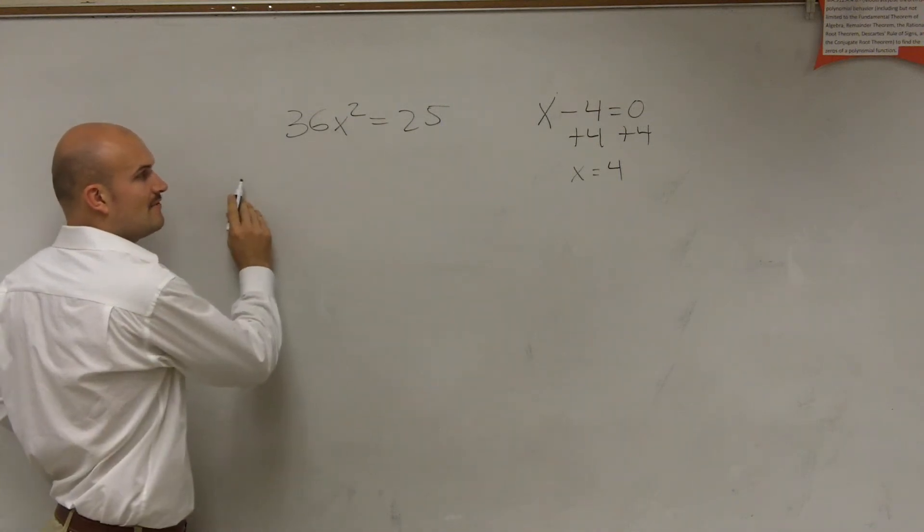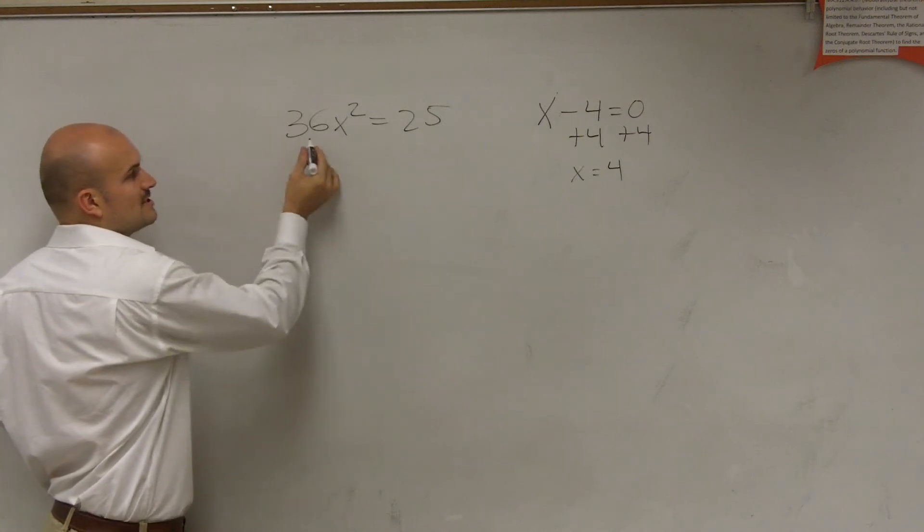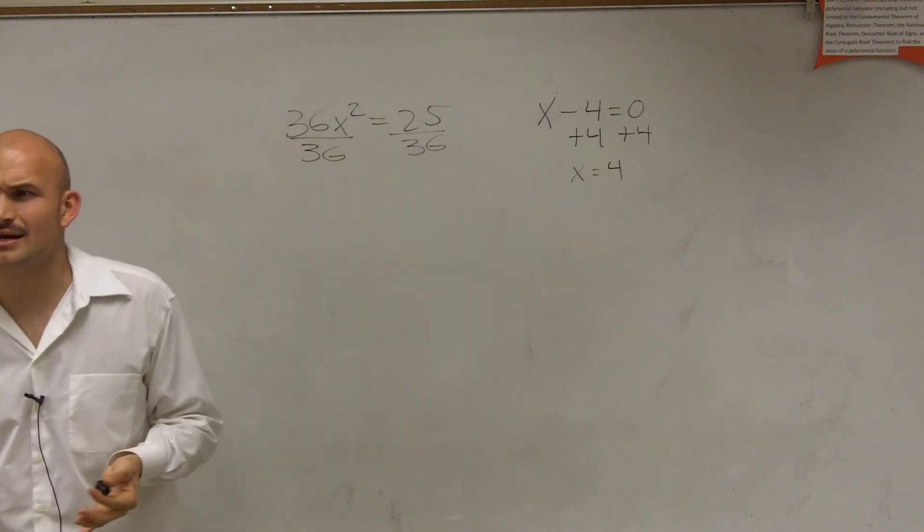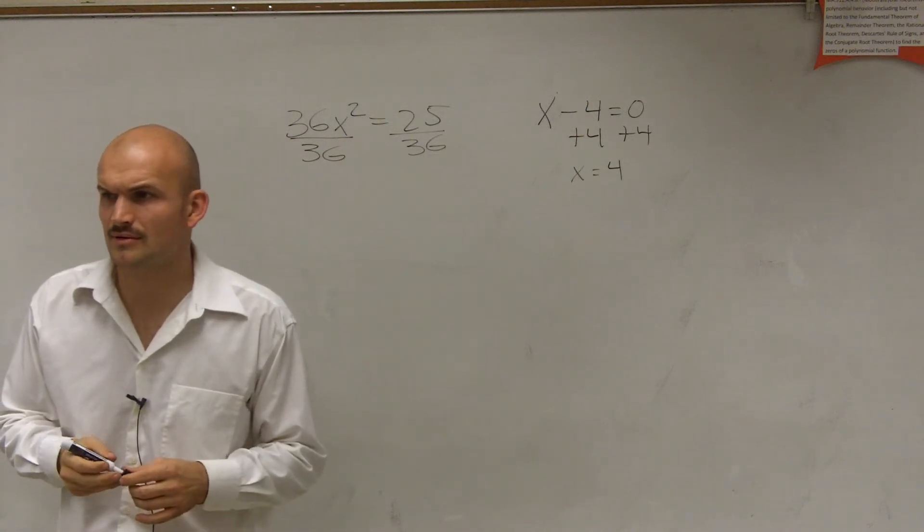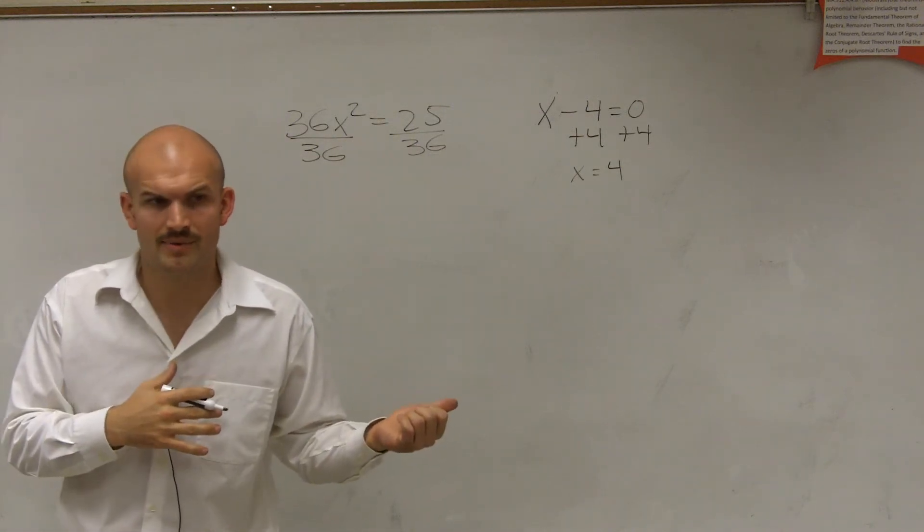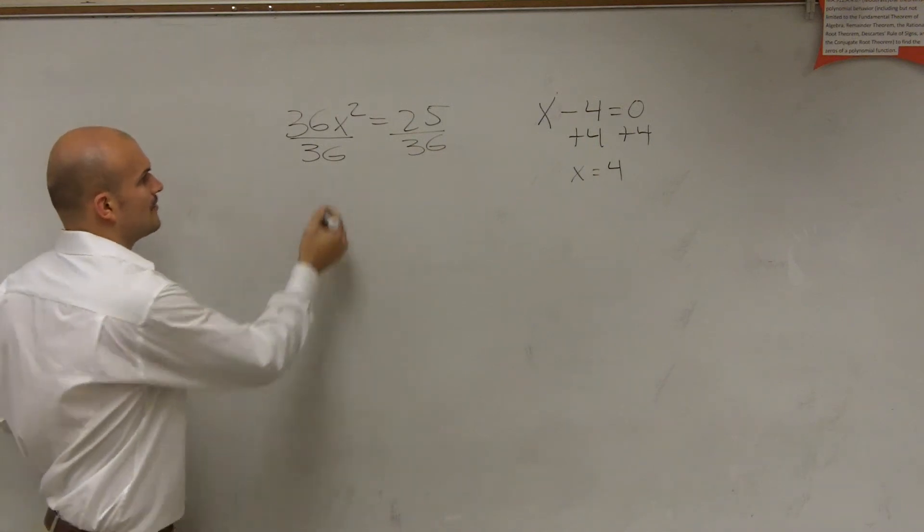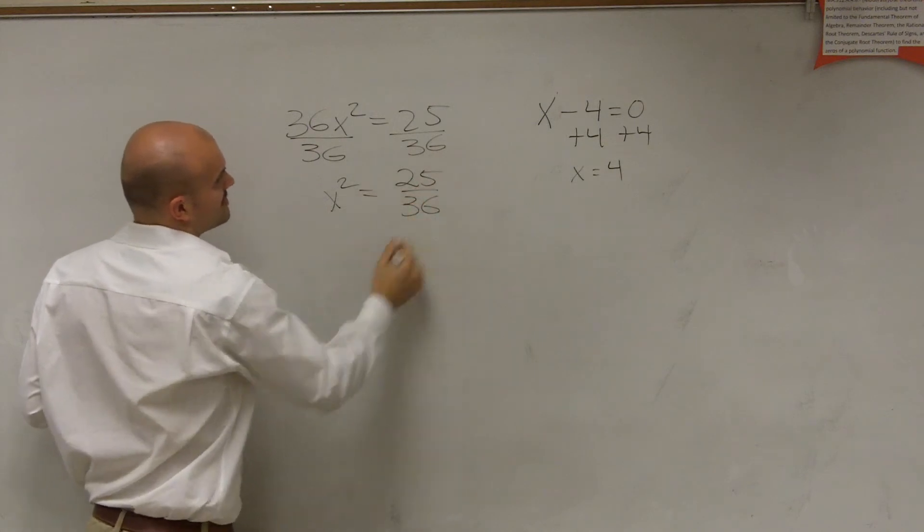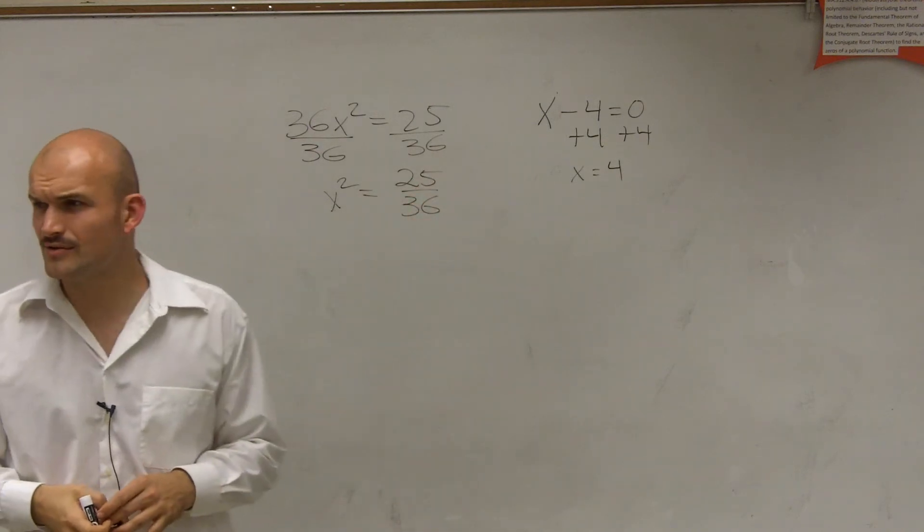So what's happening to my variable? It's being multiplied by 36. So divide by 36. Guys, can you please not, I don't understand why I'm hearing any whispering. I'm still going over a problem that you guys didn't have written down. So, therefore, you have X squared equals 25 divided by 36.